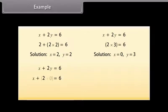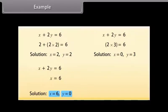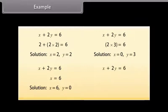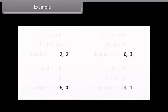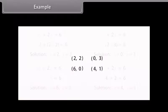Taking Y as 0, the given equation reduces to X as 6. So X is equal to 6, Y is equal to 0 is also a solution. And for the fourth solution, let us take Y as 1. The given equation now reduces to X plus 2 is equal to 6, and by substituting X as 4, we get the answer 6. Therefore, (4, 1) is also a solution of the given equation. So the four solutions we get for the given equation are (2, 2), (0, 3), (6, 0), and (4, 1).